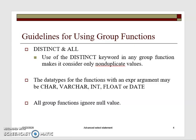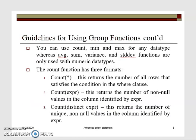The use of the distinct keyword in a group function helps to exclude all duplicate rows, focusing only on non-duplicated values. The data types we can use in group functions are char, varchar, int, float, and date. All group functions ignore null values. You can use count, minimum, and maximum for any of those data types. However, average, sum, variance, and standard deviation are specifically considered for numerical data types like int.